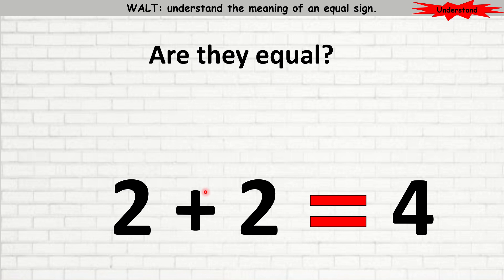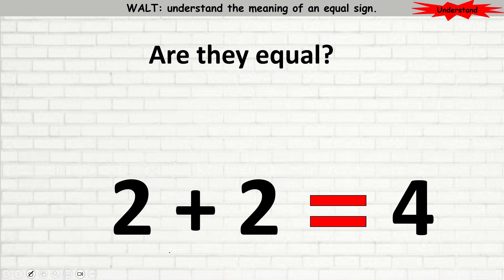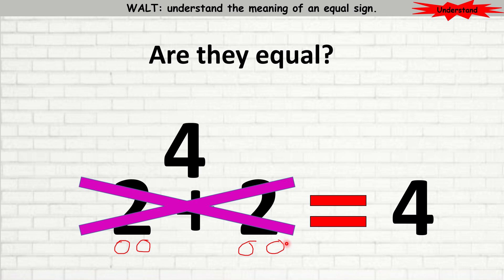Now we've got some equations here. We've got 2 plus 2, which is equal to 4. We need to identify and see if 2 plus 2 is equal to 4. You can use your doubles, or put the 2 in your mind and count up 2 more, or simply draw circles. So here I draw 2 circles and 2 more circles — how many is 2 plus 2? 1, 2, 3, 4. So 2 plus 2 is 4. 4 is equal to 4. Are they equal? Yes, that is correct.